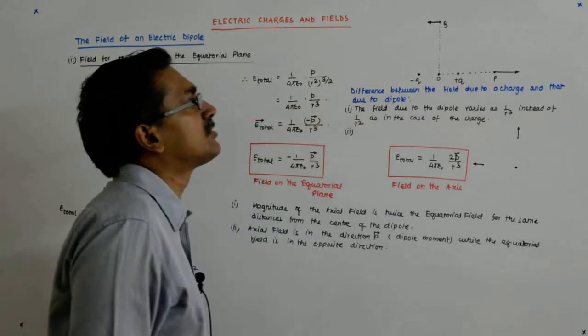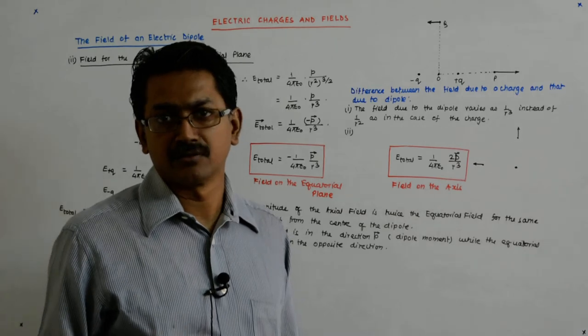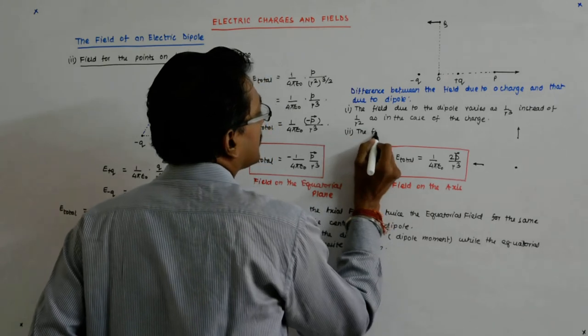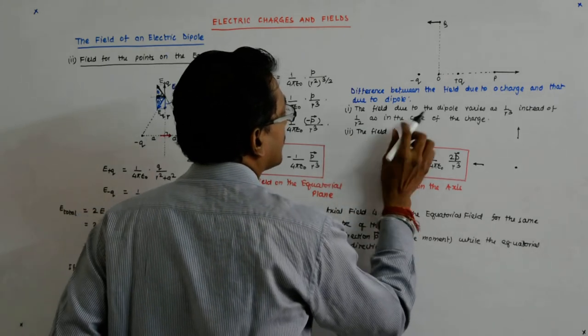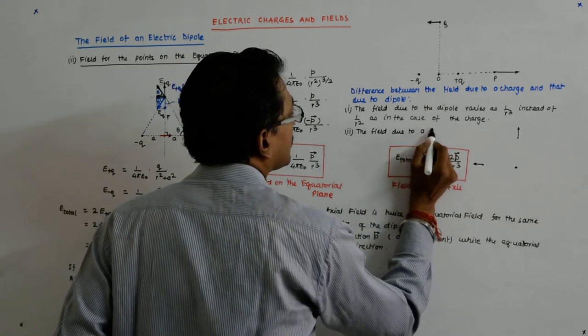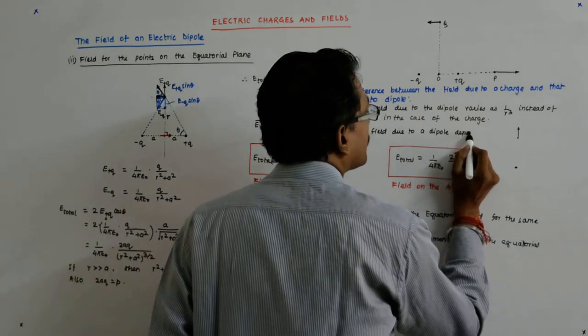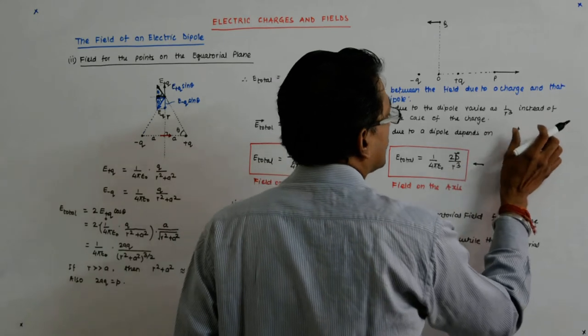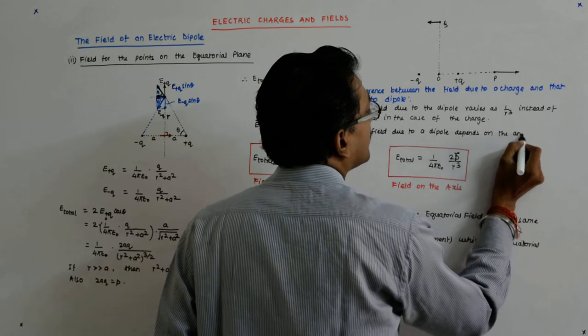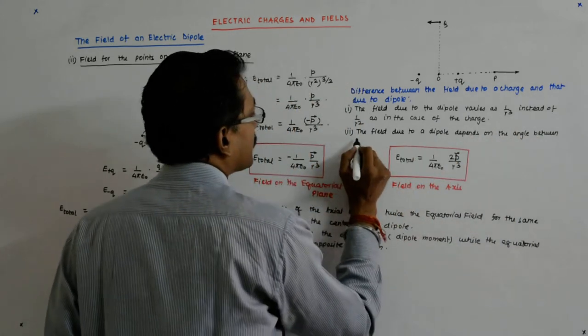In case of a dipole that is not the case. What happens in a dipole? In a dipole even the magnitude changes with the distance, with the direction. So actually the field in a dipole depends on depends on the angle between the position vector and the dipole moment vector.